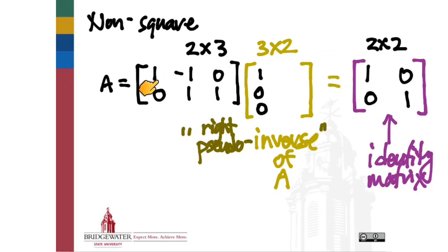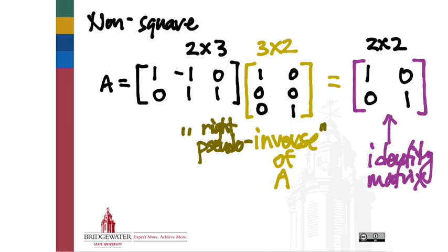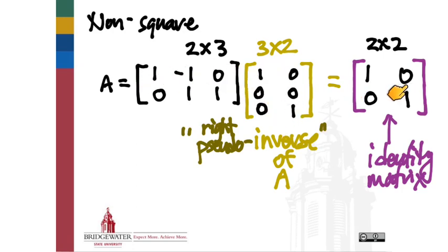The first entry: 1×1 + (−1)×0 + 0×0 = 1. Second row, first column: 0×1 + 1×0 + 1×0 = 0. First column looks good. For the second column I need something orthogonal to the first and whose dot product with the second row equals 1 — [0, 0, 1] fits. Checking: second row, second column gives 0×0 + 1×0 + 1×1 = 1; first row, second column gives 1×0 + (−1)×0 + 0×1 = 0. So we've found a right pseudo-inverse of A.